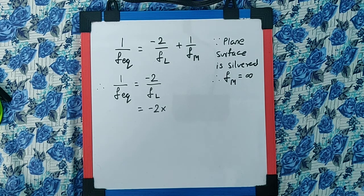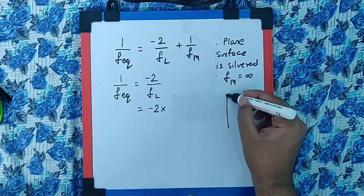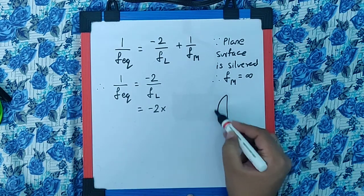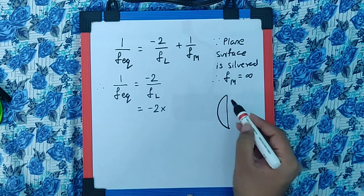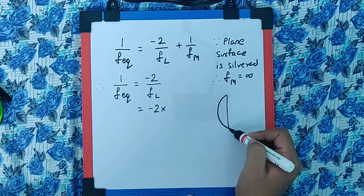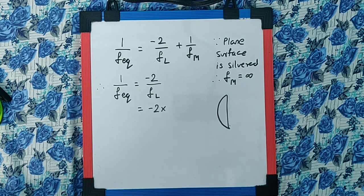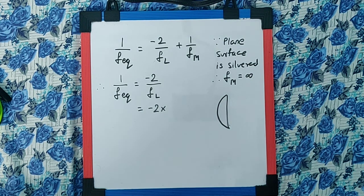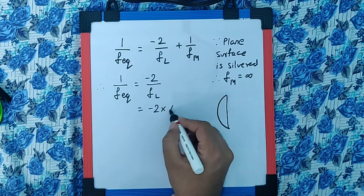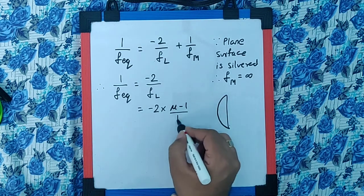R1 will be positive if I take the plano-convex lens like this. So this R1 is going to be positive and R2 is going to be infinite. So the formula will turn to mu minus 1 into 1 by R, which is mu minus 1 upon R.